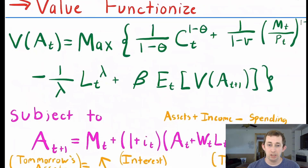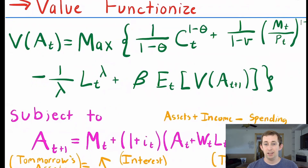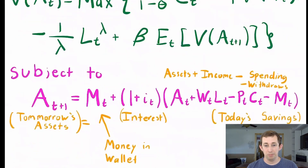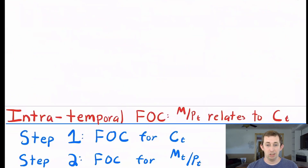So let's value-functionalize this problem. A value function turns that long infinite problem into today and tomorrow. The today part is consumption, real money demand, and labor today. The tomorrow part is beta times the expected value of the value function tomorrow. The budget constraint doesn't change.